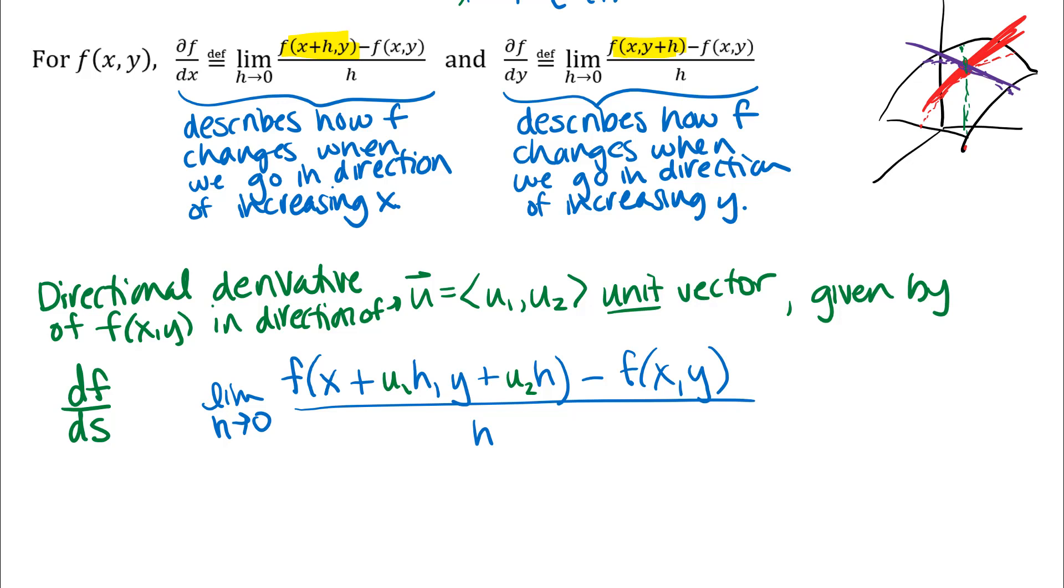The units on this would be rate of change of f with respect to distance df/ds. And that s is the same s that we've seen before, an arc length parameter. The arc length parameter is what allows you to describe distance using the same scale in your x and y direction, but in other directions. We used that when we looked at distances along curves. Here we're going to be looking at distances basically along curves that are cross-sectioned through the surface.